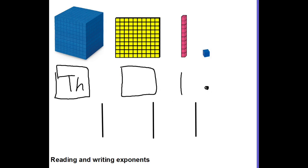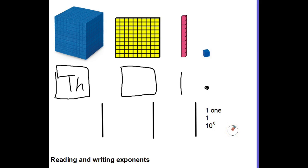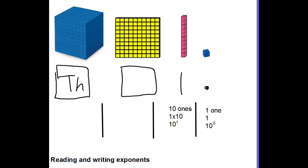Let's start in the ones place and see how it relates to powers of 10 and exponents. The unit, which is a 1, corresponds to 10 to the 0 power, which is equivalent to the number 1. Our long is represented by 10 ones, so 1 times 10 is 10. And 10 to the first power tells us that we are multiplying 10 one time, giving us our long or rod.